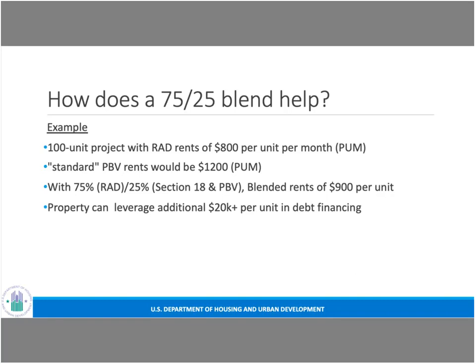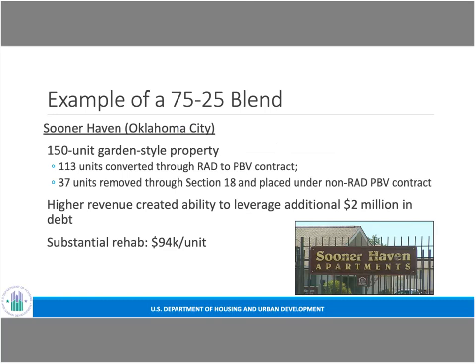That's a really significant bump in the ability to leverage financing. As an example, one of our first blends is Sooner Haven in Oklahoma City — a 150-unit property where 113 units converted through a RAD project-based voucher contract and 37 units were removed through Section 18 and placed under a non-RAD project-based voucher contract. The higher revenue enabled the housing authority to raise an additional two million dollars in debt, and they were able to do substantial rehab totaling $94,000 per unit in construction costs.